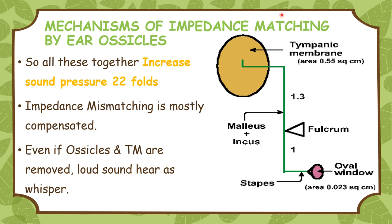In this way, the impedance mismatching between the air-filled middle ear and fluid-filled inner ear is mostly compensated. Therefore, when the tympanic membrane and the ossicles are removed, sound waves striking the oval window directly would be heard as a very loud sound only as a whisper.